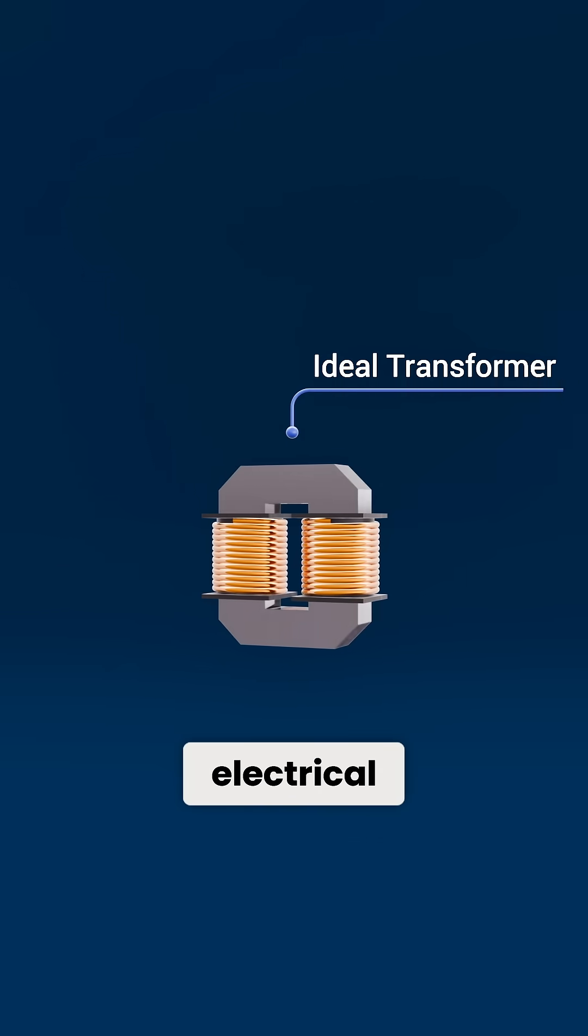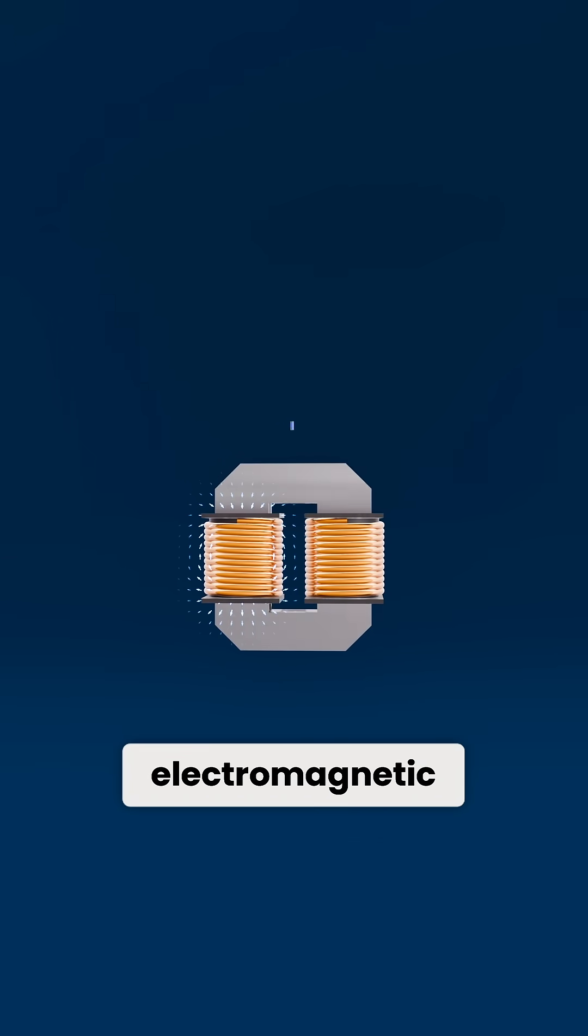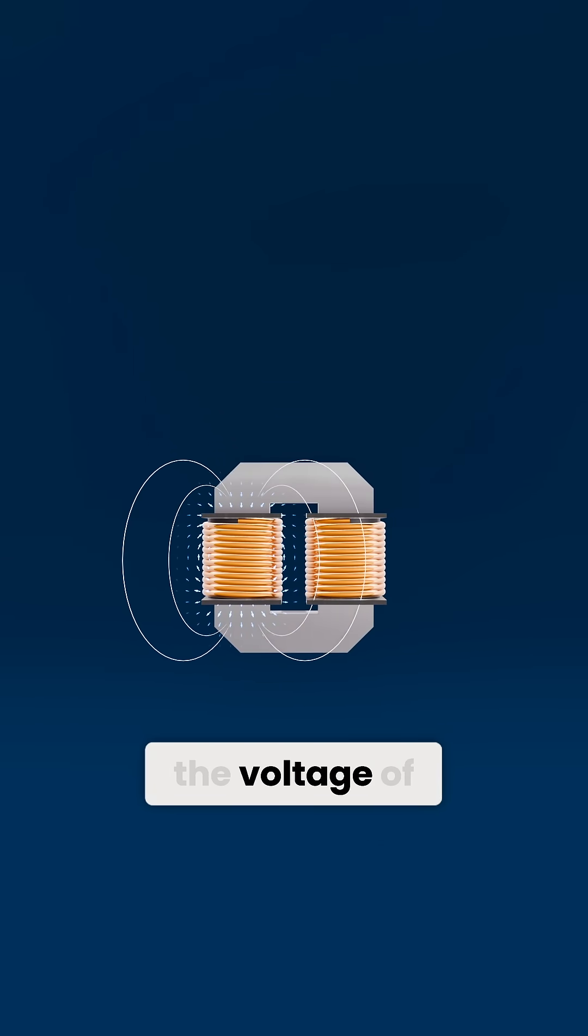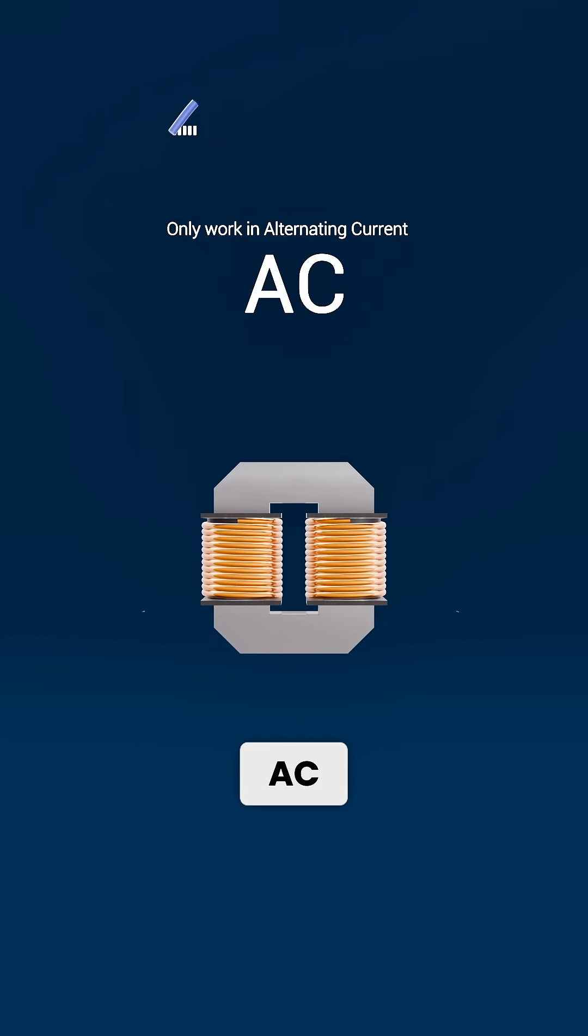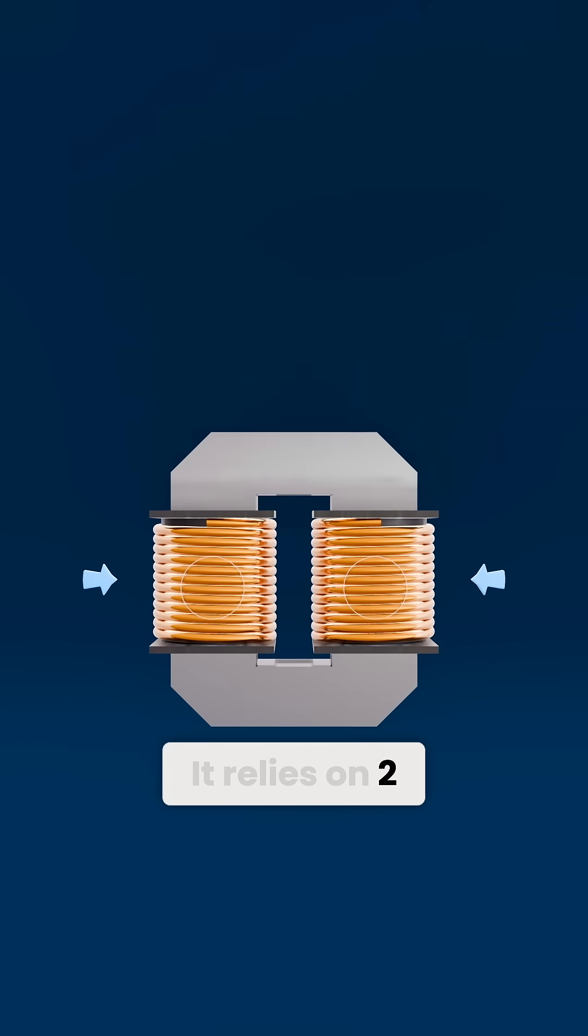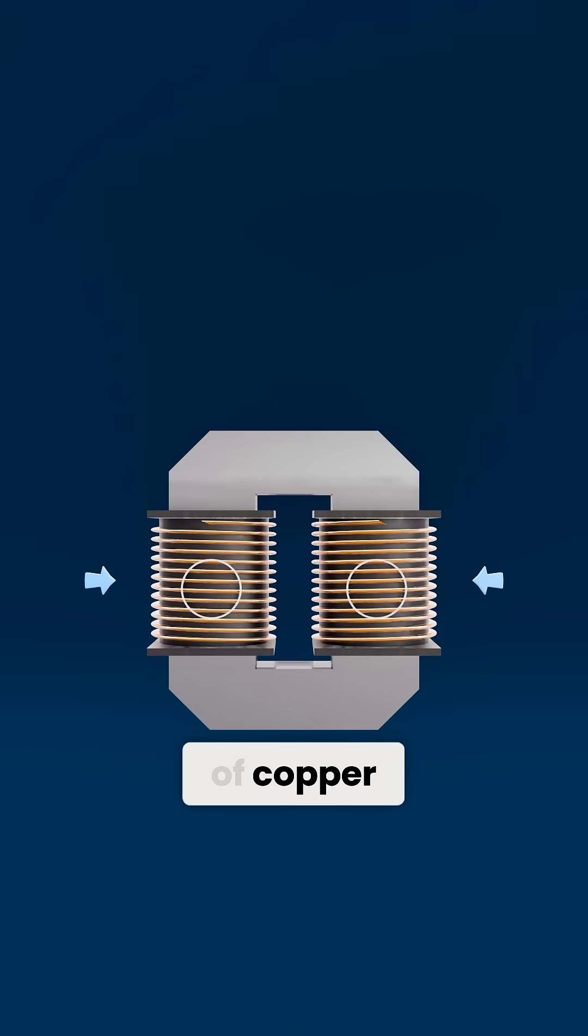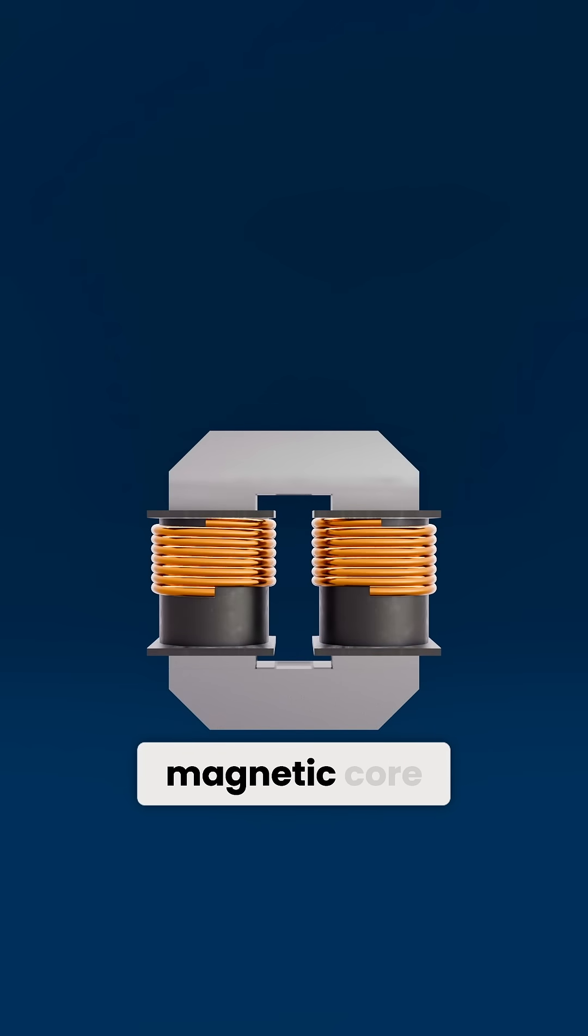A transformer is an electrical device that uses electromagnetic induction to change the voltage of an alternating current, AC, without changing its frequency. It relies on two separated coils of copper wire wrapped around a magnetic core.